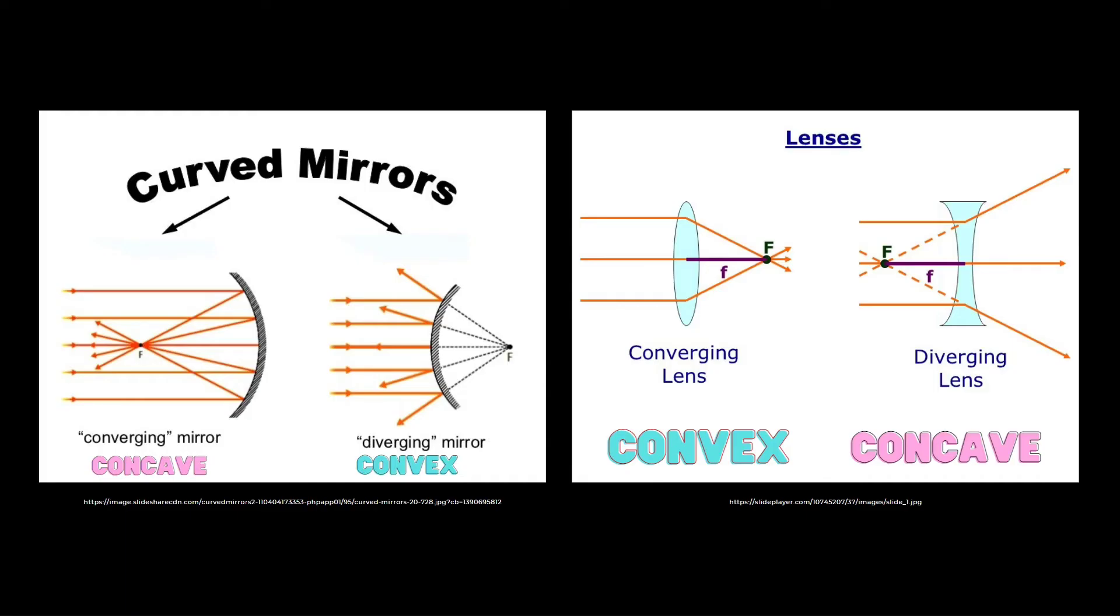We have curved mirrors and lenses. Let's not get confused. When it's concave mirror, this is it, and there is converging of light happening. For lenses, if you notice, the definition of converging is for convex lens. If you see light passing through lenses, then here at the focal point, this is where they converge.